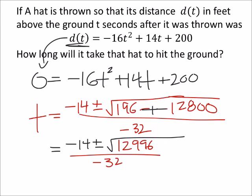Okay, so time would be negative 14, plus or minus 114, all over negative 32, and we can evaluate these separately.